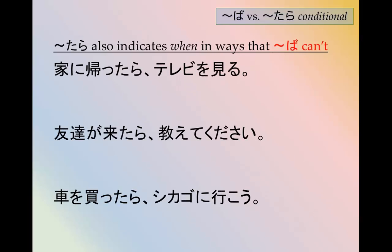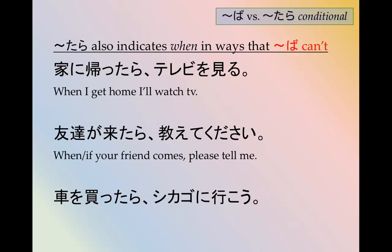Note that the たら form can express 'when' in a way that ば cannot — when one thing happens, this is the result. For example: 家に帰ったらテレビを見る — when I get home, I'll watch TV. 友達が来たら教えてください — when your friend comes, please tell me. 車を買ったらシカゴに行こう — when/if you buy a car, let's go to Chicago. You can't use the ば form for these temporal 'when' conditions.